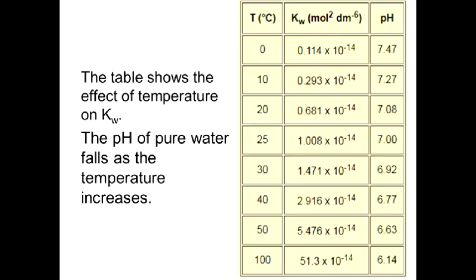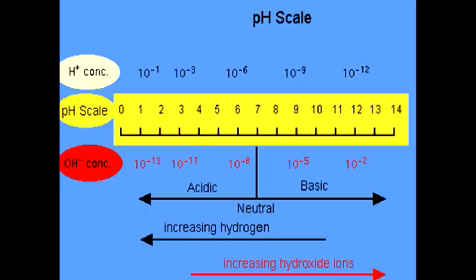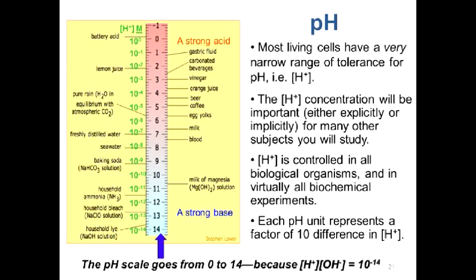For different temperatures, the ionic product of water is slightly different. For this course we solve all problems at 25°C, but remember that human body temperature is 37°C, so the ionic product of water and the pH of neutral medium are slightly different. This picture shows the relation between the pH scale and hydrogen ion and OH⁻ ion concentrations. A medium with pH less than 7 is acidic, and more than 7 is basic.